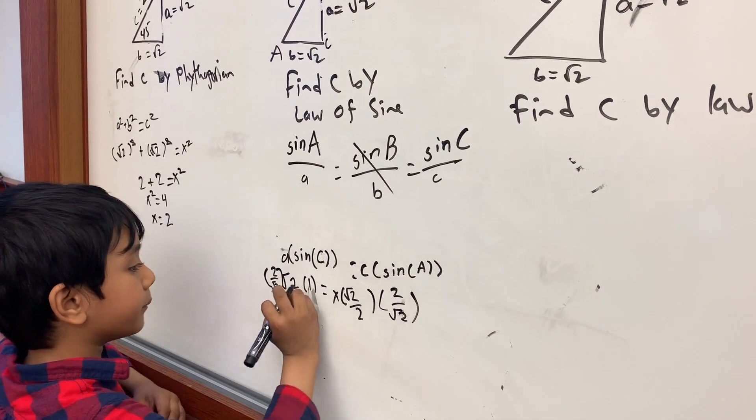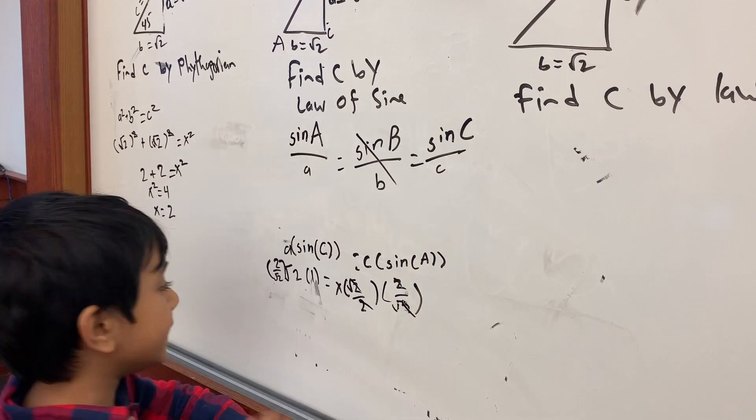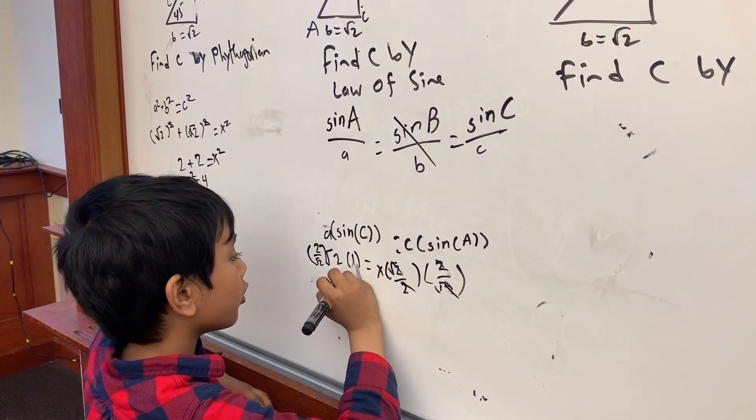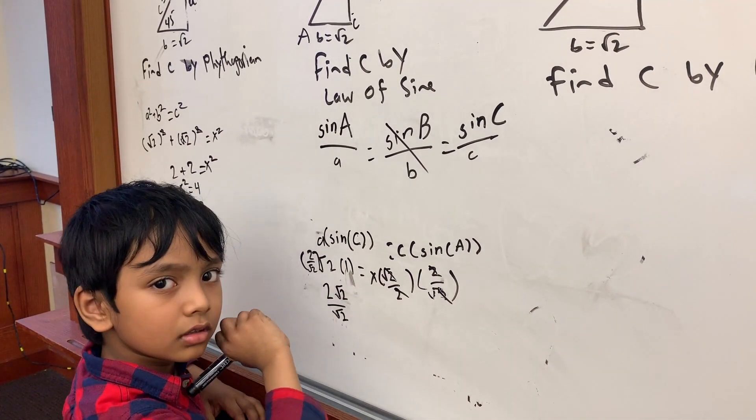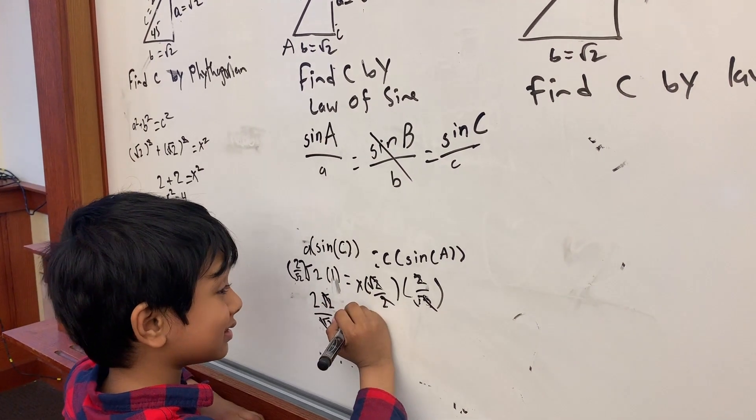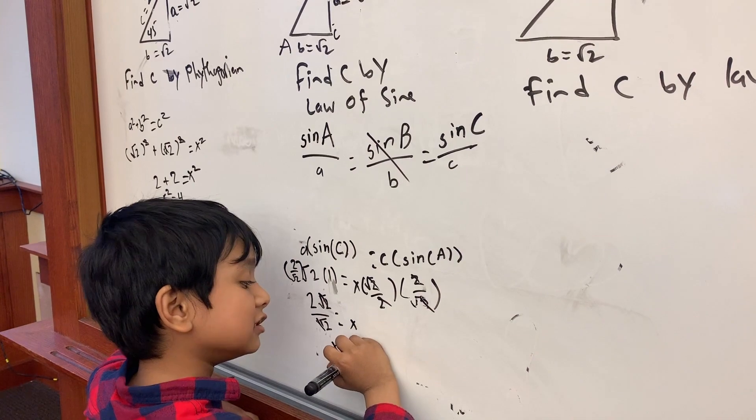And then we cancel these out, so 2 over 2 with 2 equals x. So x equals 2.